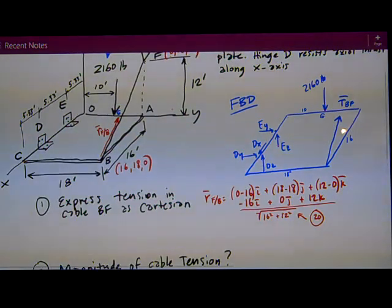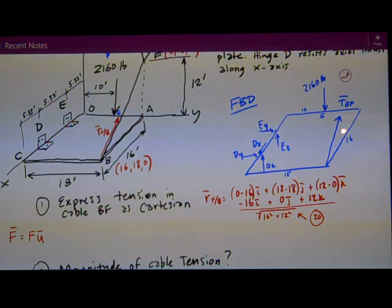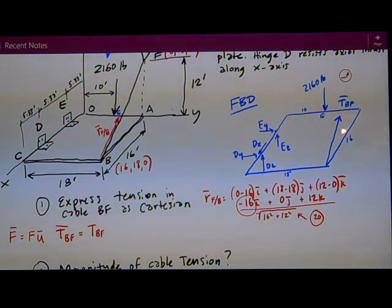So what I'm basically going with is the basic formula that F, any vector F is its magnitude times U, its unit vector. The unit vector is just these numbers, negative 16 divided by 20, zero, and then 12 divided by 20. So I can just write TBF out in that form, do the math.